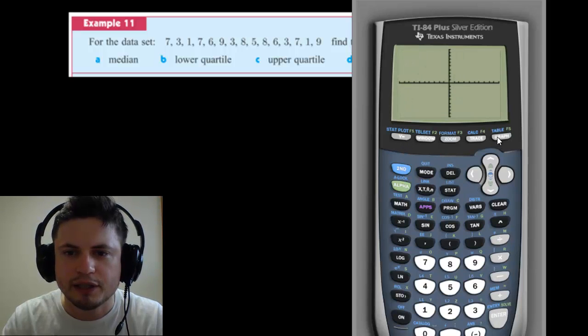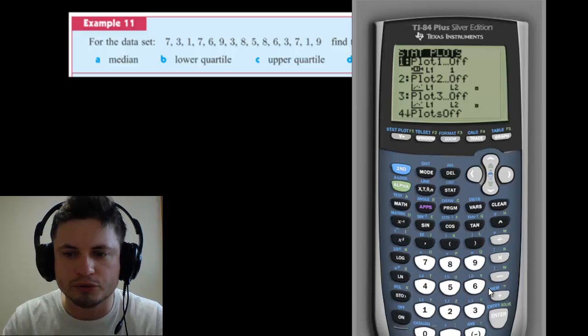You don't see anything yet because for stat plots, you actually have to enable them. So click on second Y. This is called stat plot. Go into, let's just do plot number two. It doesn't have to be one or two. It doesn't actually matter.